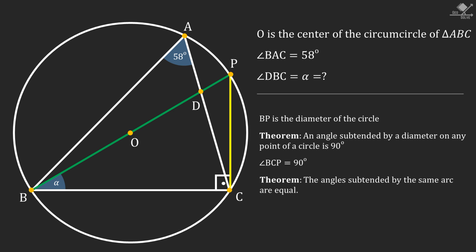We also know that the angles subtended by the same arc are equal. Notice that angle BAC and BPC are subtended by the same blue arc, so they must be equal and angle BPC will also be 58 degrees.